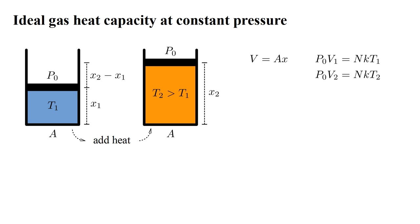The piston has moved the distance X2 minus X1. This requires work equal to force times displacement. The force is pressure times area, P0 A. So the work W is P0 A times X2 minus X1, which is P0 times the volume change, V2 minus V1. Using the gas law expressions, this is NK times T2 minus T1.